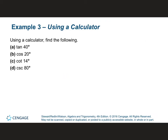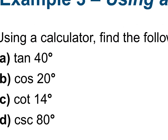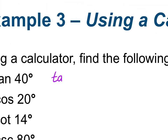Let's practice. Tangent of 40 degrees: hit tan, parenthesis comes up, hit 40 — give four decimal places. You should get 0.8391. If you got negative 1 point something, you're in radians. Cosine of 20 degrees: cosine 20, enter — and we get 0.9397.